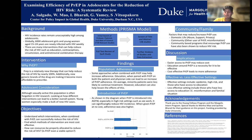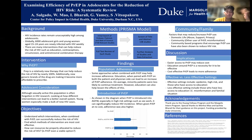Some objectives we had for the study were to understand which interventions, when combined with PrEP, can successfully reduce the risk of HIV, or if PrEP reduced the risk of HIV at all; to find which methods of intervention are most cost-effective; and finally, how resources can properly be allocated to reduce the risk of HIV and if PrEP was even a viable option.